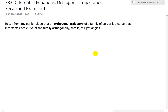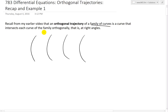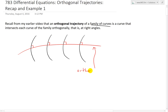Basically, what we mean by this: if you have a bunch of curves — let's say you have a bunch of curves — this is a family of curves. An orthogonal trajectory is a curve that intersects each of these family of curves at right angles. For example, let's draw this in red and assume these are all right angles. It's not drawn perfectly to scale, but assume these are all right angles, and this red curve would be called an orthogonal trajectory.